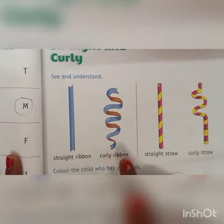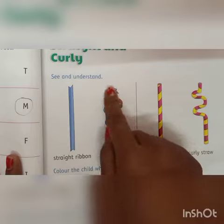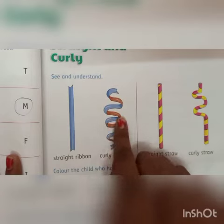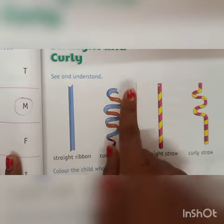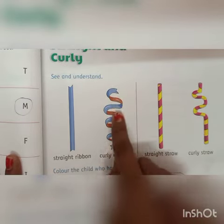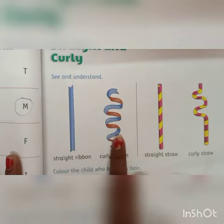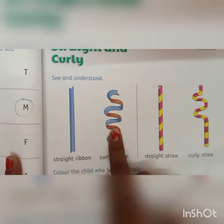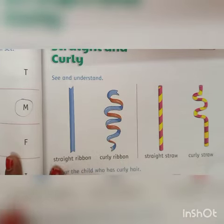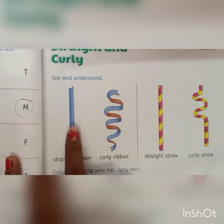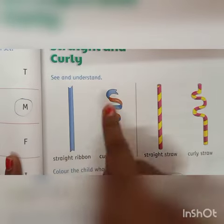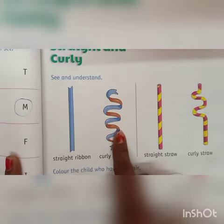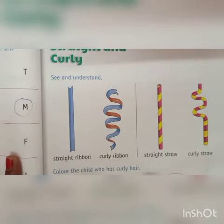Then you can see the curly ribbon. This is curly. You can see if you have curls. This is called curl. So this is a straight ribbon — these are straight. These are curly ribbons.